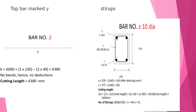For stirrups, assume a stirrup having a width of 230 mm and height of 375 mm. After deducting the cover, the width will be 140 mm and the height will be 285 mm. Cutting length = 2A + 2C + 20 dia (hook length) = 2 × 140 + 2 × 285 + 20 × 10 (10 mm dia bar) = 1050 mm.